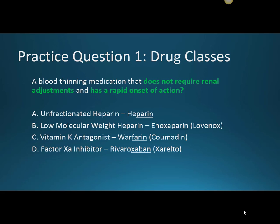So for our first practice question, we have a blood thinning medication that does not require renal adjustments and has a rapid onset of action. Is that A, our unfractionated heparin; B, our low molecular weight heparin, enoxaparin, brand name Lovenox; C, our vitamin K antagonist, warfarin, brand name Coumadin; or D, our factor Xa inhibitor, rivaroxaban, brand name Xarelto?